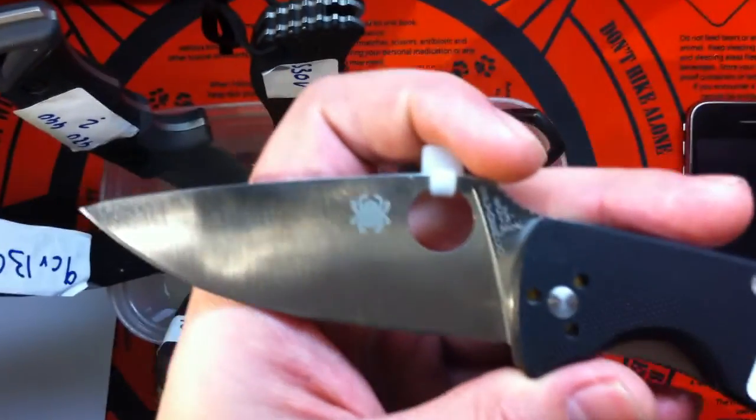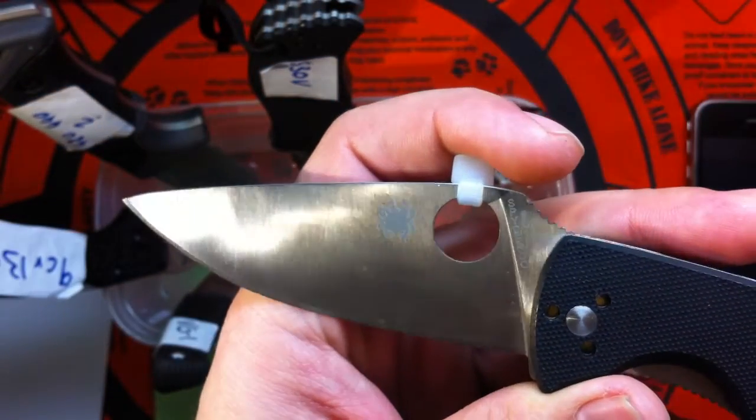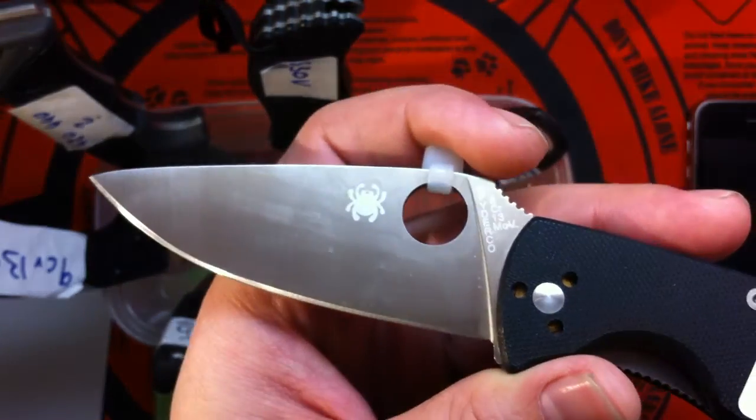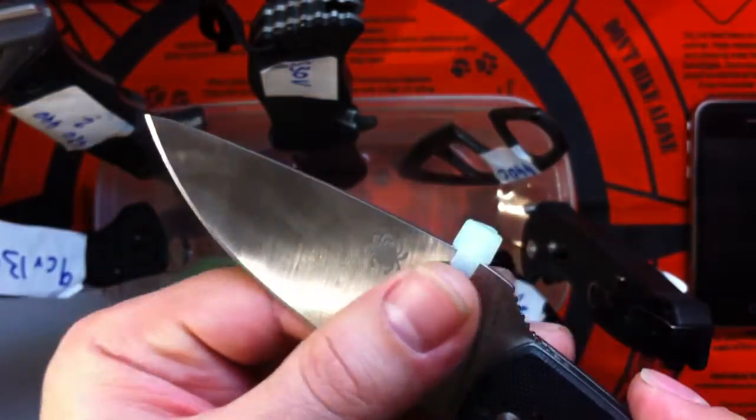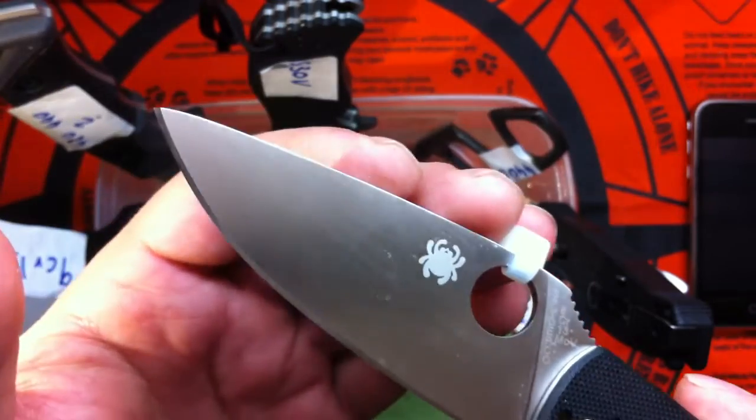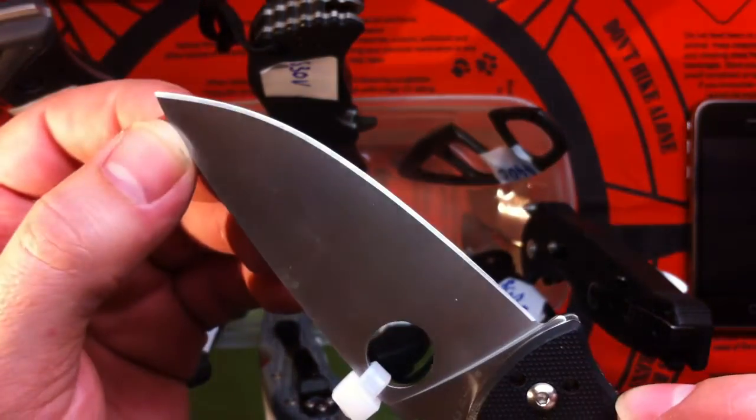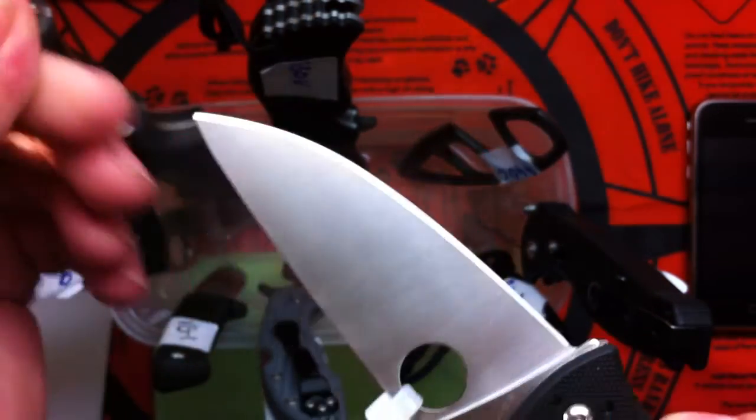Like I said, I think if your blade rusts on you, it's just neglected steel. You didn't take care of it at all. All it takes, even when you store it, is put a little bit of WD-40 or Rem oil.